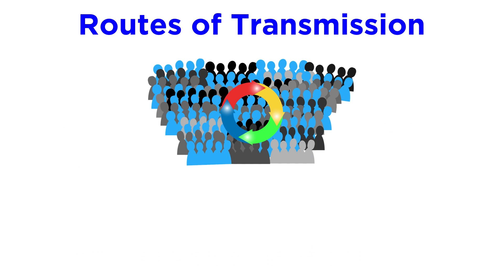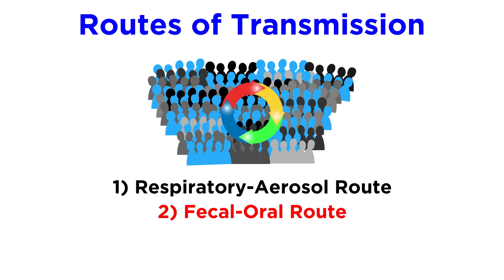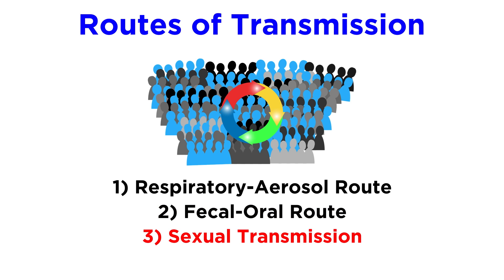On the other hand, for viruses already in a human population, the most common routes of transmission are as follows: one, the respiratory aerosol route, or breathing in droplets from someone's cough or sneeze; two, the fecal-oral route, or ingesting particles of infected feces; three, sexual transmission; and four, the other category, including less common routes that use direct and indirect contact.